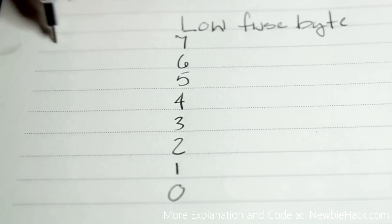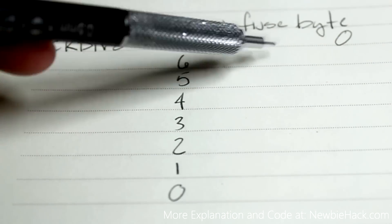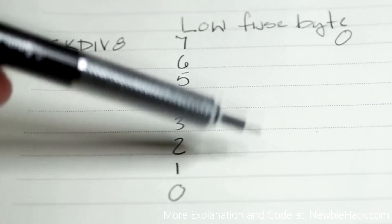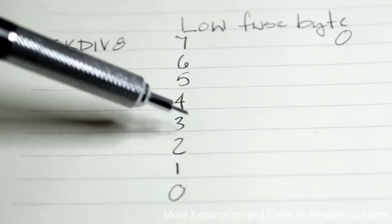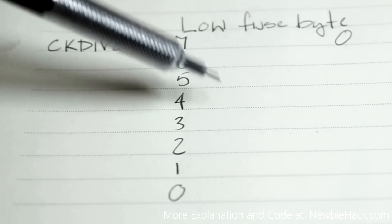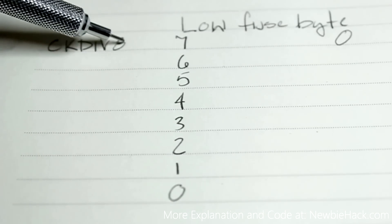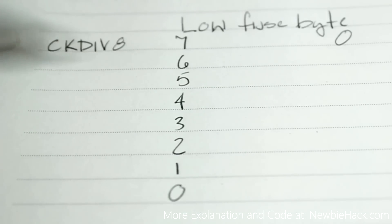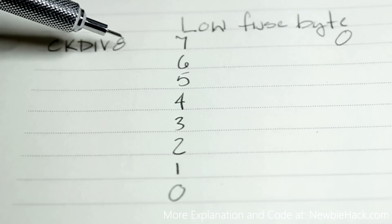The first bit is CK DIV8, and that means the clock divided by 8. As a default, this is programmed. So when you get your ATmega324P microcontroller, it is actually an 8 MHz microcontroller — that's its native clock speed. But as you know, we've only been able to get 1 MHz because this bit is set and it's dividing by 8. This is like a prescaler — your clock is only ticking on every 8 ticks of the actual clock built into the microcontroller.